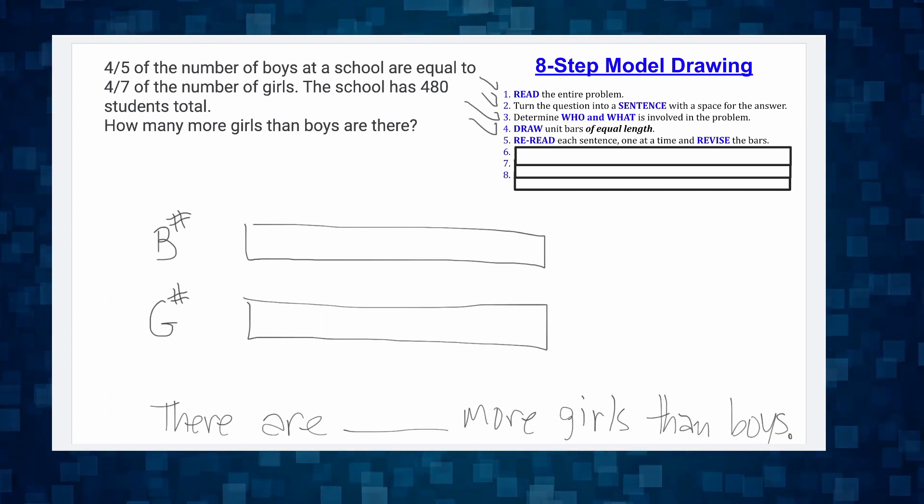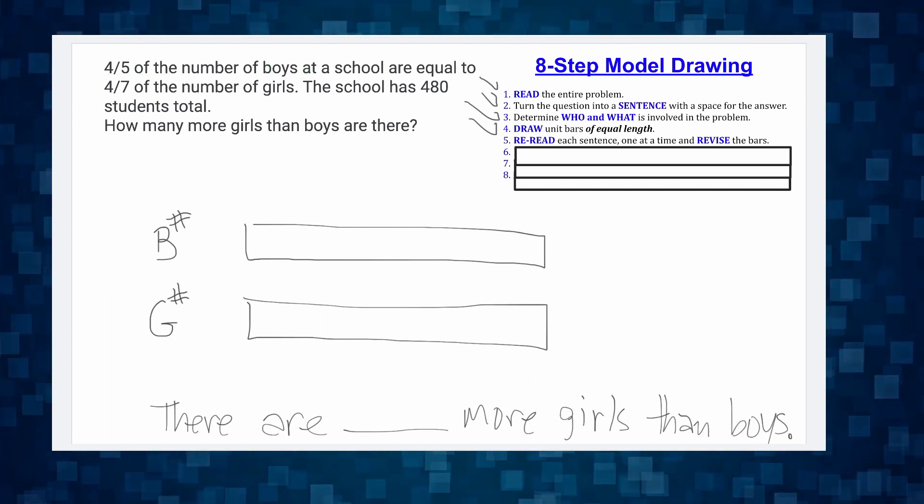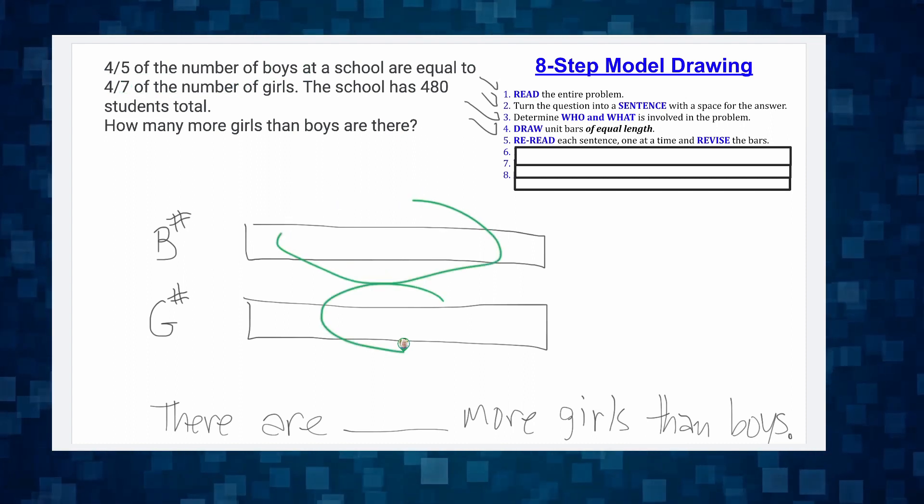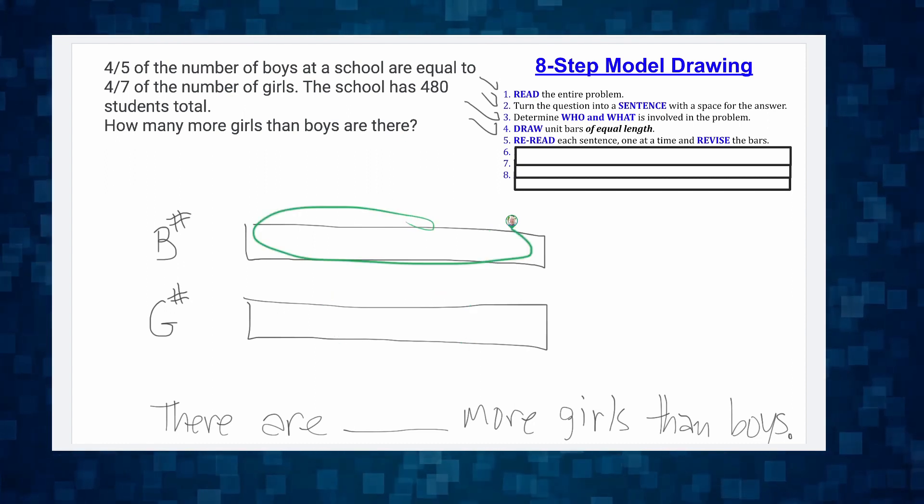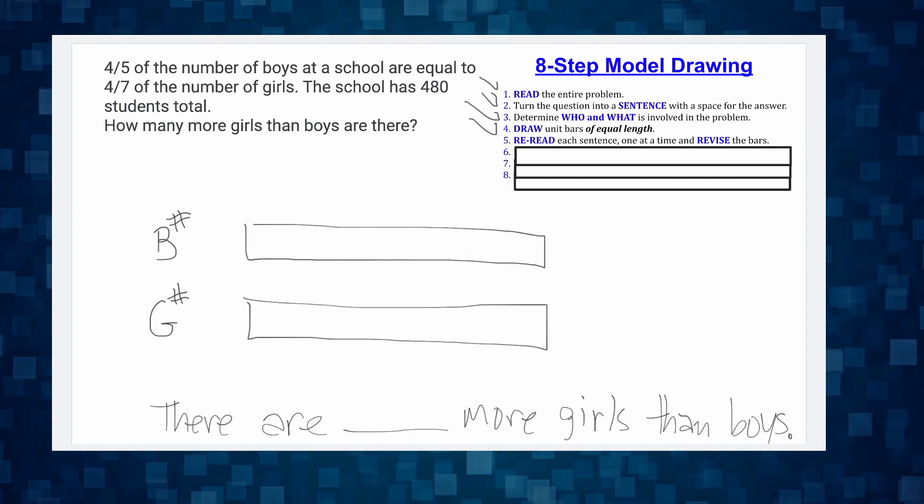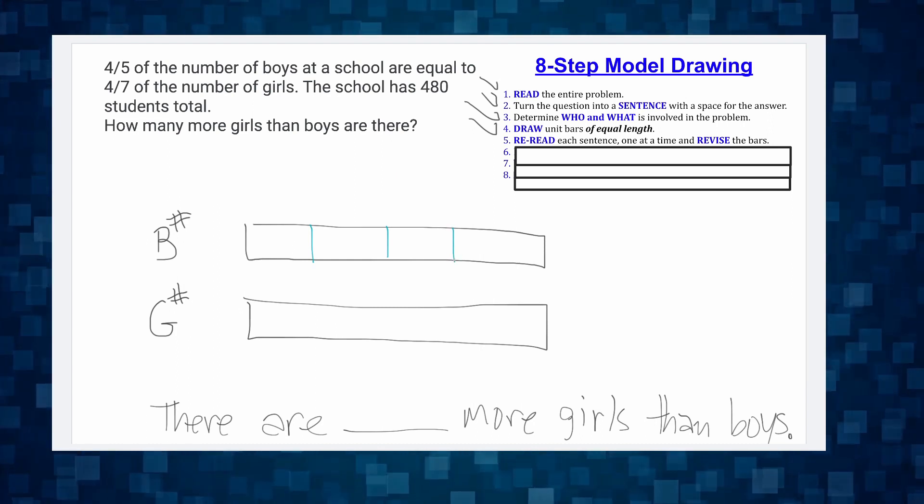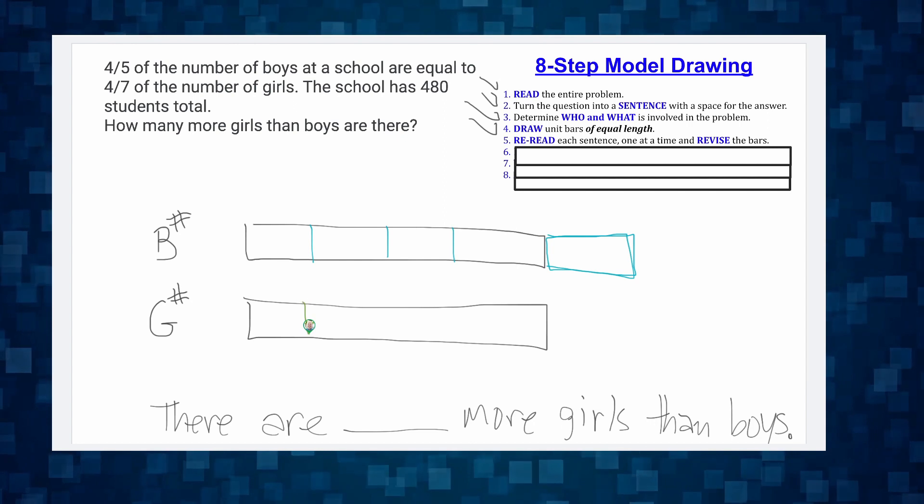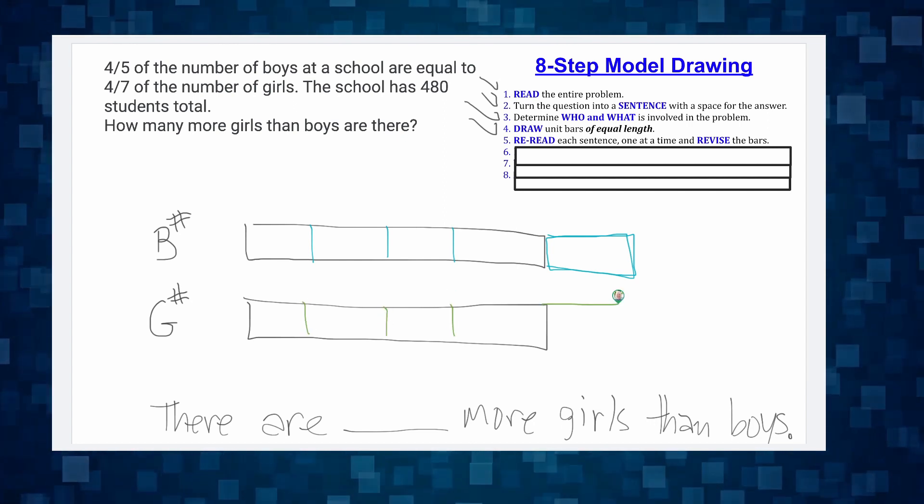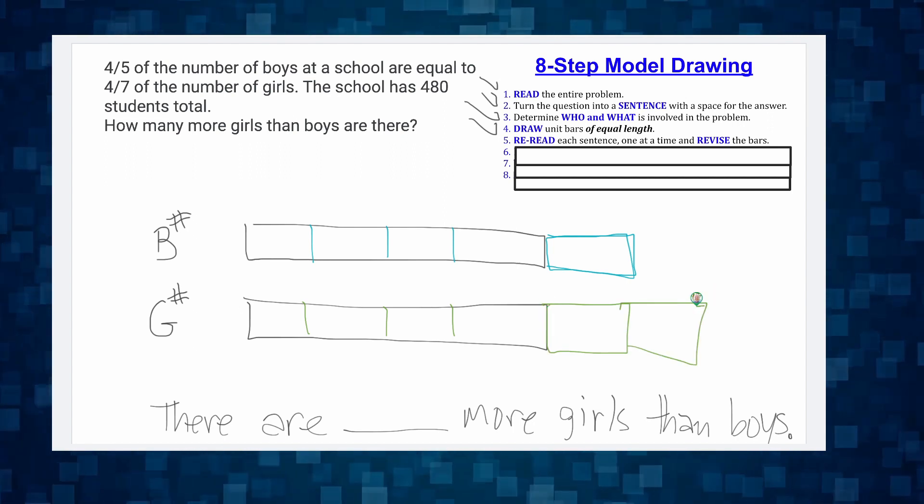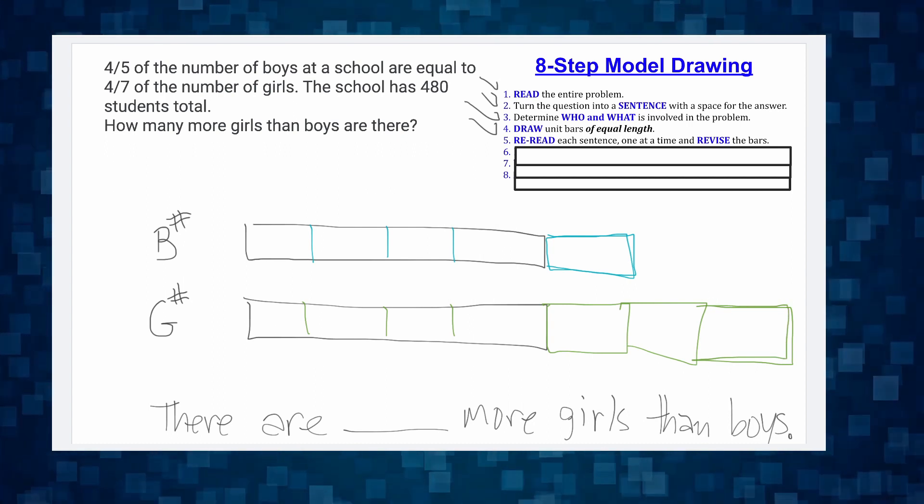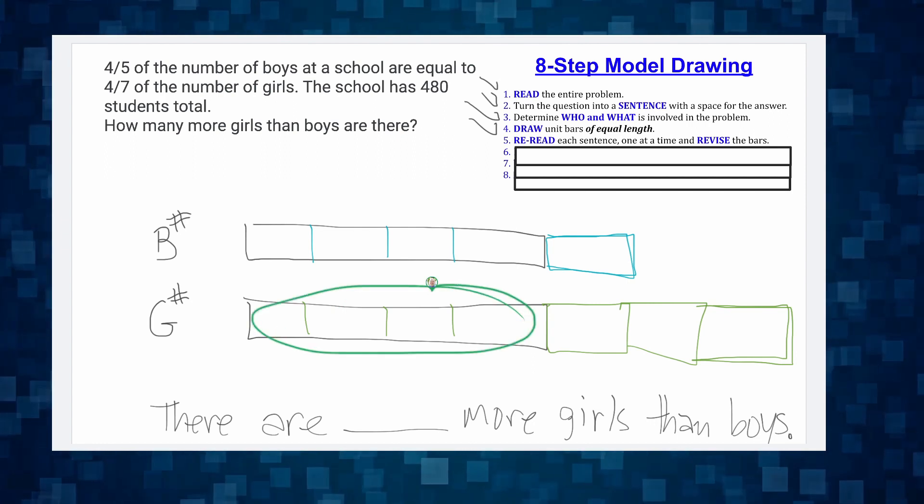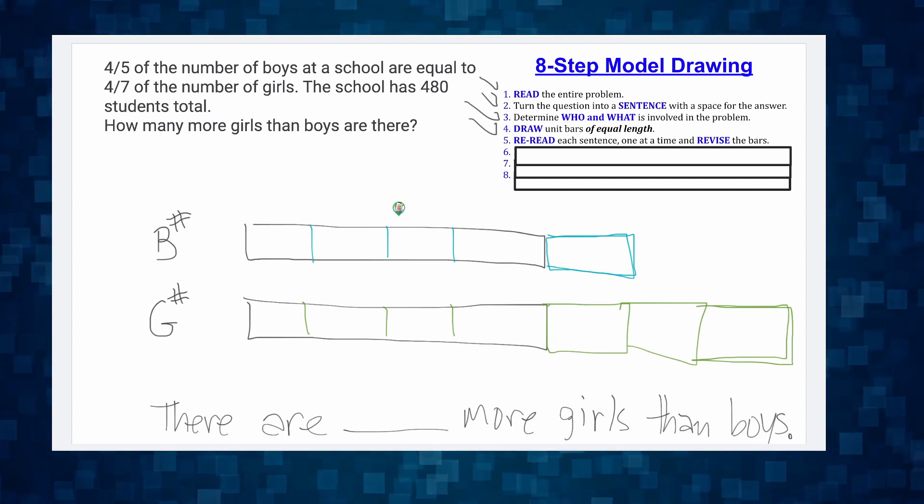And it says, four-fifths of the boys at a school are equal to four-sevenths of the girls. Well, we already have equal bars. So that means this is the four-fifths and this is the four-sevenths. So let's see. I might cut this into four-fifths, which means I have to draw in an extra unit to represent the fifth. And then down here for the girls, that represents the four-sevenths. So I need to put in one, two. Uh-oh. Look at that. See? I'm running out of room. There's that three. There's my four-sevenths is the girls. So here's the four-sevenths is the girls. Four-fifths is the boys. Right? So then it says, the school has 480 students total. Oh my goodness. So what I'm going to do is I'm going to outline this whole thing and I'm going to shrink it down a little bit and move it over here.